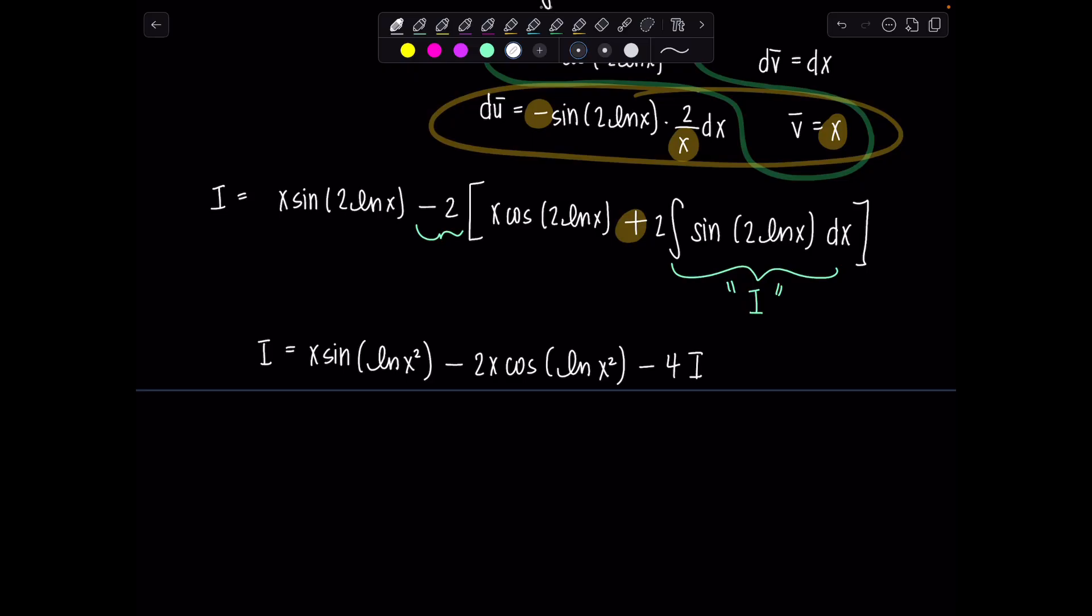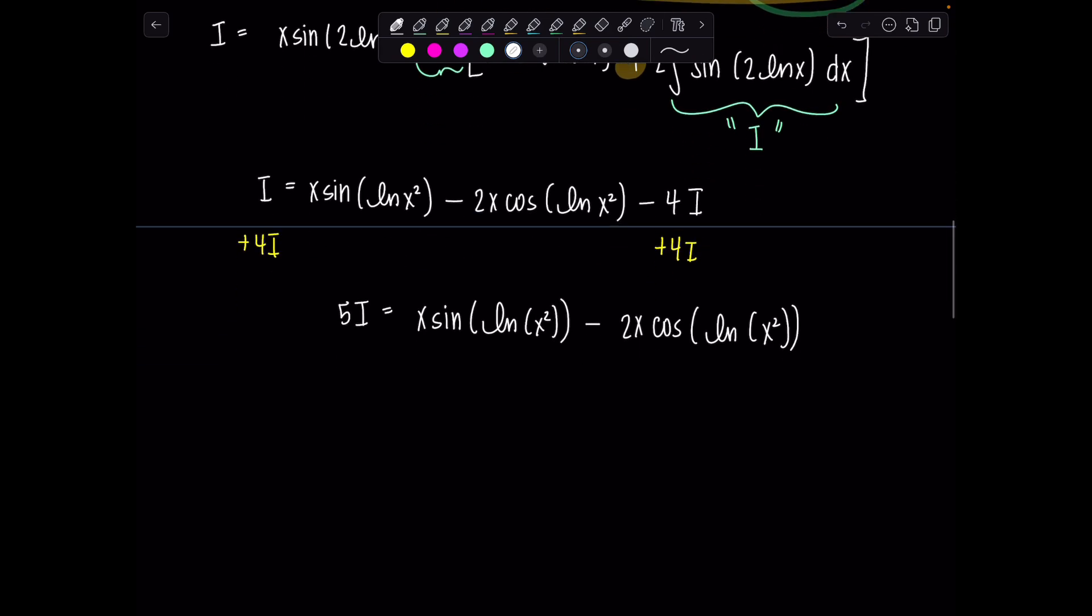Are we okay? All right, now your goal is to solve for i. That's how we can evaluate the antiderivative. Add 4i to both sides. Then we have 5i equals x sine of ln minus 2x cosine of ln of x squared. I need to divide by 5. Very good.